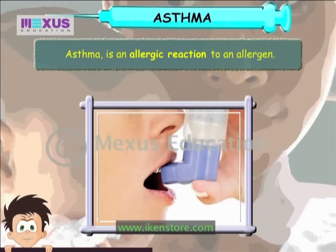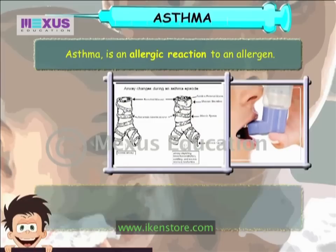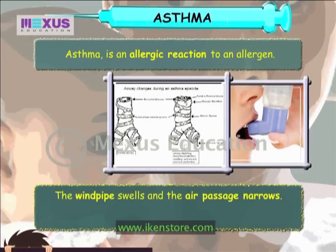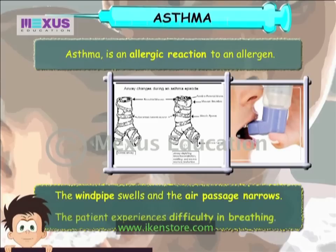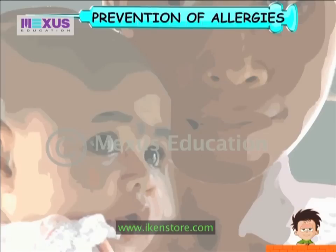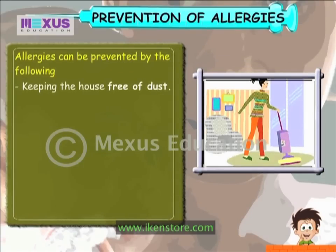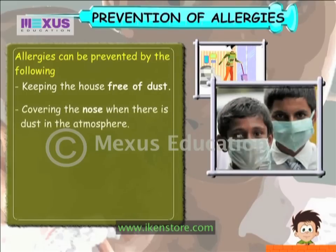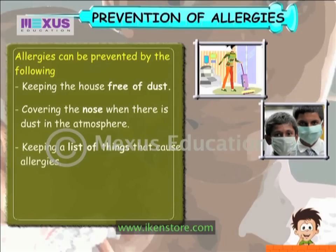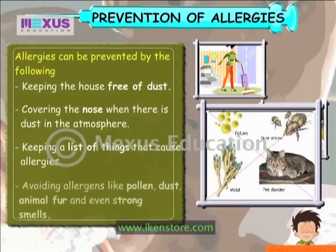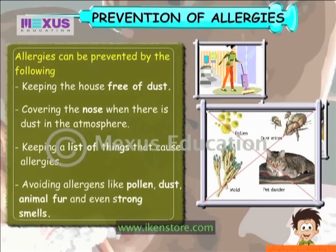Asthma is an allergic reaction to an allergen. The windpipe swells and the air passage narrows, and the patient experiences difficulty in breathing. Allergies can be prevented by keeping the house dust free, covering the nose when there is dust in the atmosphere, keeping a list of things that can cause allergies, and avoiding allergens like pollen, dust, animal fur and even strong smells.